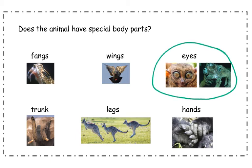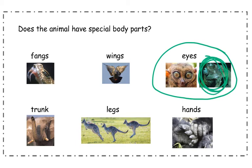An animal's eyes could be their special body part. This animal, called a loris, has really big eyes. Their eyes are so big because this animal comes out at night time, when it's hard to see in the dark — their eyes help them see in the dark. A chameleon is also an animal with special eyes. Chameleons are able to move their eyes different ways: this eye is looking up to see if there are any predators, and this eye is looking to the front to find some food. A chameleon can use their eyes and look in different spots at the same time.